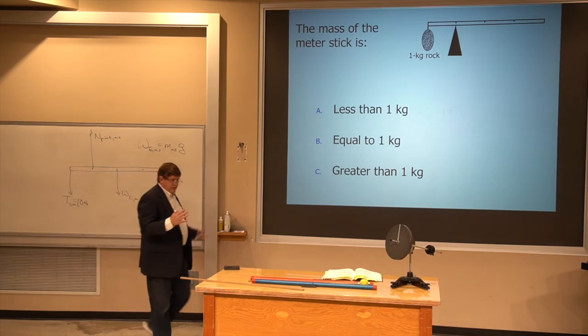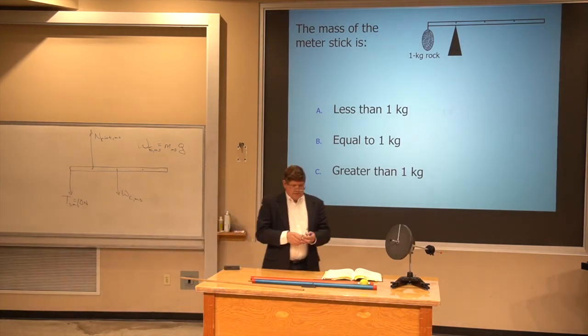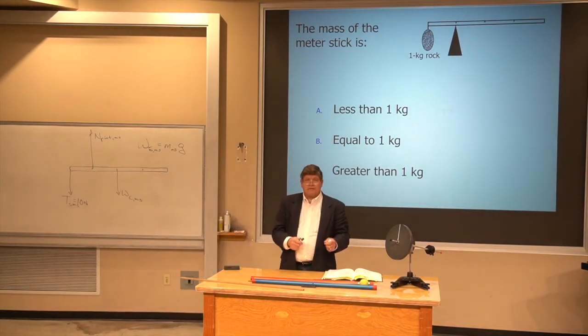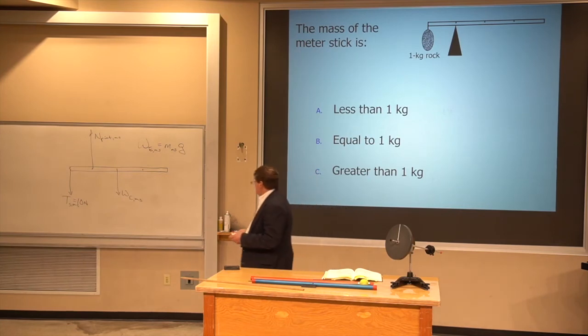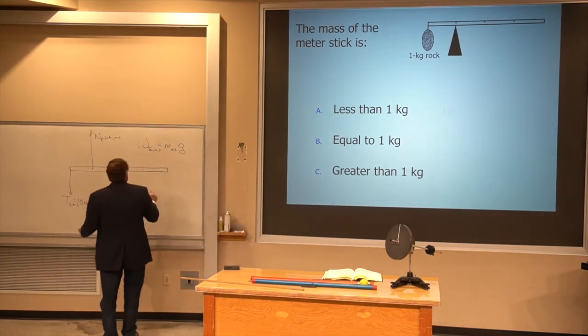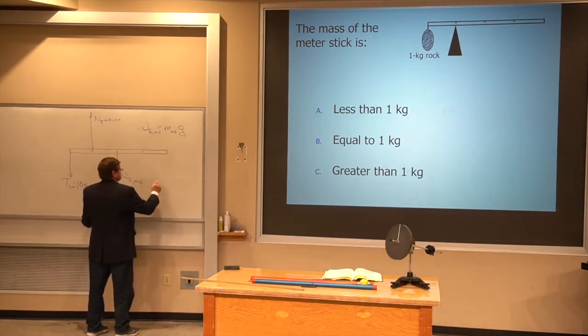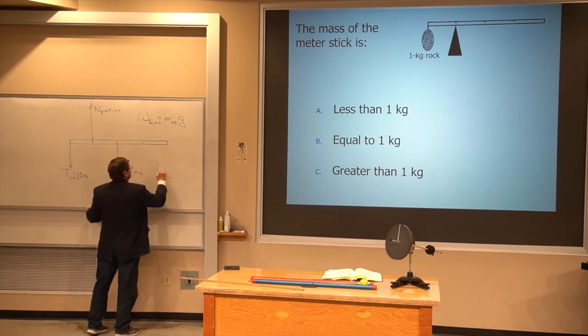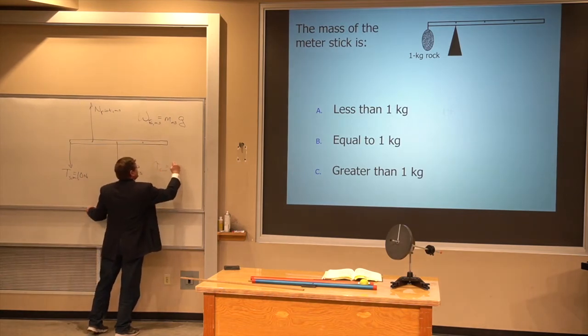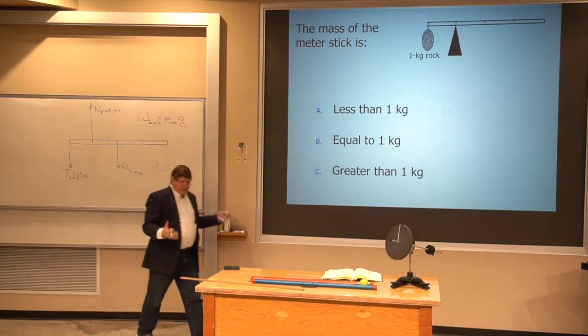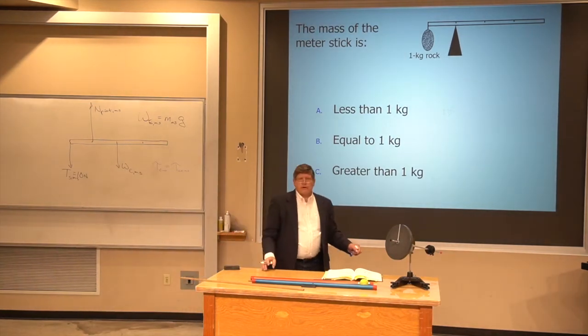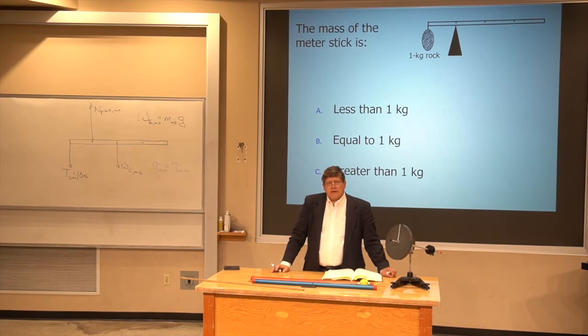Now, once I have drawn my extended free body diagram, I want to balance all the clockwise torque with all the counterclockwise torque. But I can't find a torque without first defining a pivot.